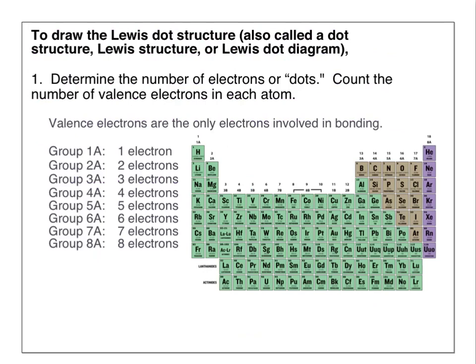The first step is to determine the number of valence electrons to draw in your Lewis dot structure. Valence electrons are the only electrons involved in bonding. They are farthest from the nucleus, so they can interact with other atoms. We'll be looking at main group elements on the periodic table, groups 1A through 8A. The group number matches the number of valence electrons in that group.